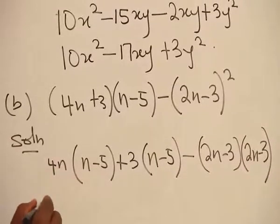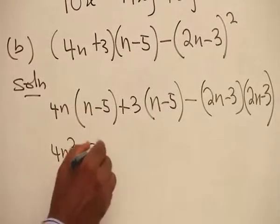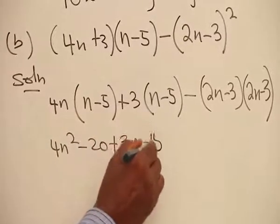We expand this one to give you 4n squared and then minus 20. Here is 3n minus 15.